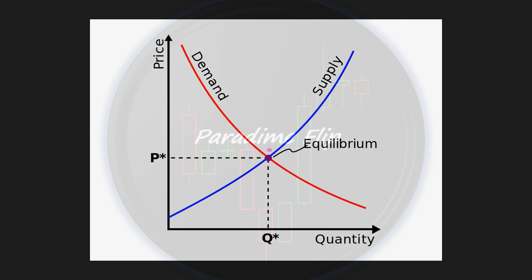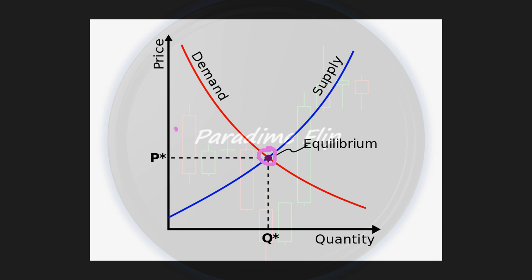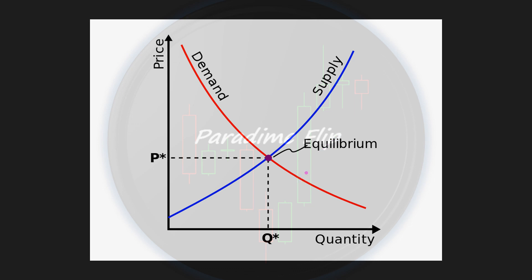When demand increases and supply stays the same, what we get is a shift in the equilibrium value — this is key to our lesson. If demand decreases, the equilibrium shifts lower. When supply increases the equilibrium shifts lower, and when supply decreases the equilibrium shifts higher.